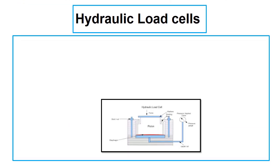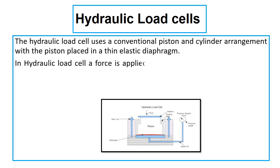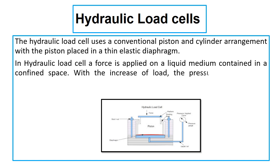Let us discuss the hydraulic load cell. The hydraulic load cell uses a conventional piston and cylinder arrangement with the piston placed in a thin plastic diaphragm. In a hydraulic load cell, force is applied on a liquid medium contained in a confined space. With the increase of load, the pressure of the liquid increases. This increase in pressure of the liquid medium is proportional to the applied force.